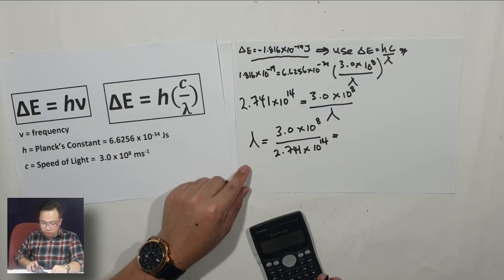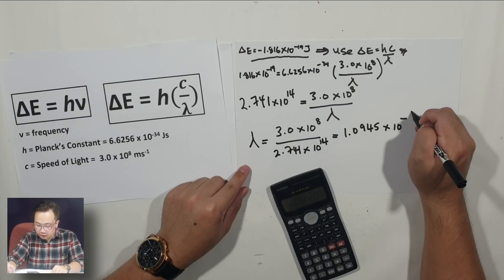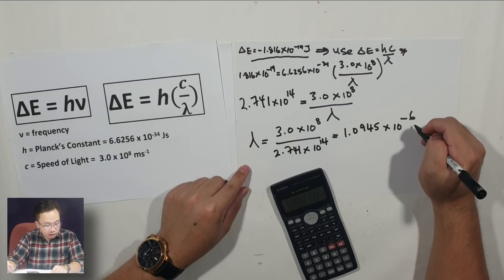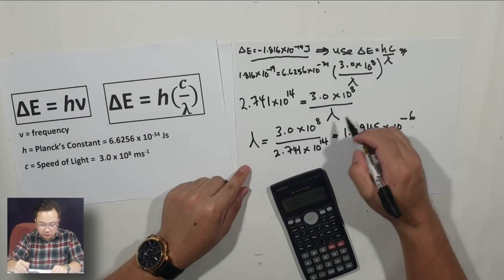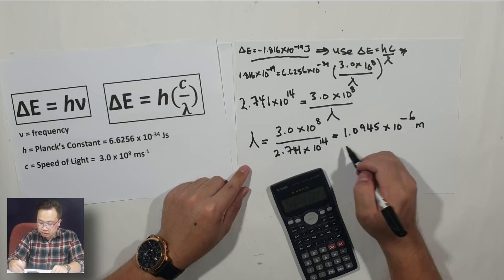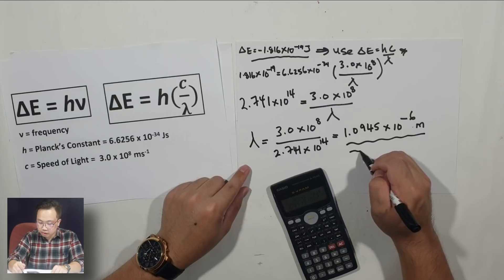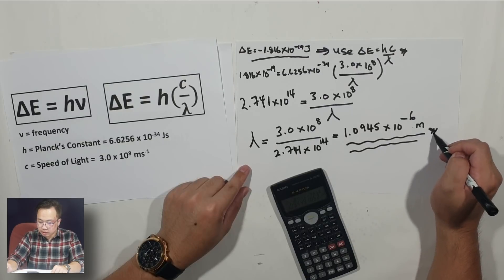And what do we get? 10 to the negative 6. This one should be in meters. That is the wavelength.